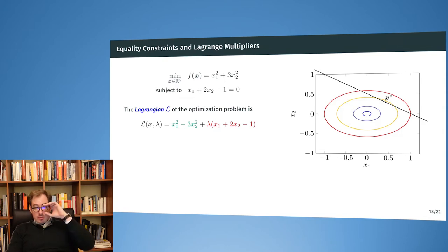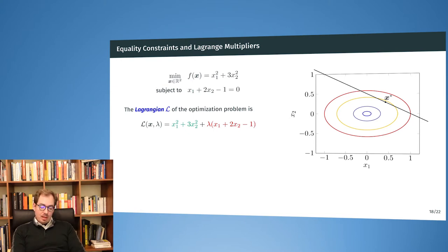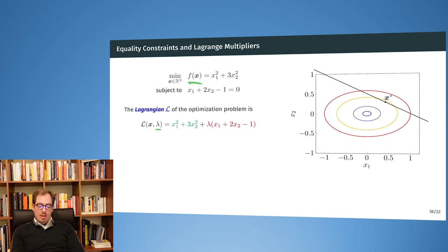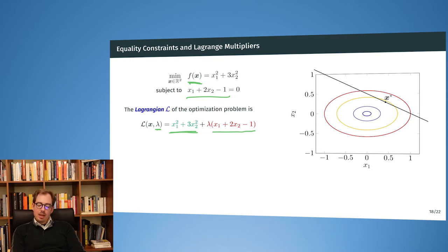What we do is we construct a so-called Lagrangian. The Lagrangian is an extended optimization problem. Our original optimization problem is f of x, and the Lagrangian adds another variable: the lambda variable. What I have now is my original optimization problem plus lambda times what comes out of the equality constraint. I take the equality constraint equals 0 and plug that in, adding lambda times the equality constraint.